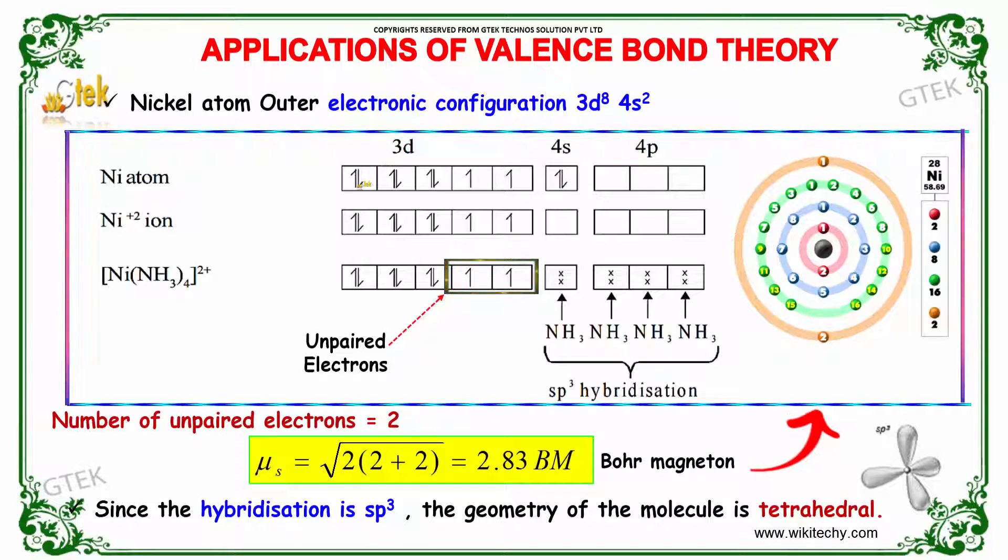It has the 3d orbital with 4s2. For the Ni2+ ion, two electrons are removed, so the 4s2 is gone and these become unpaired electrons.